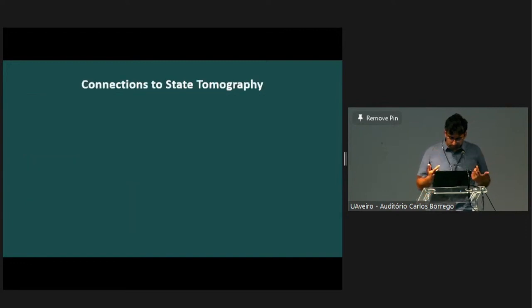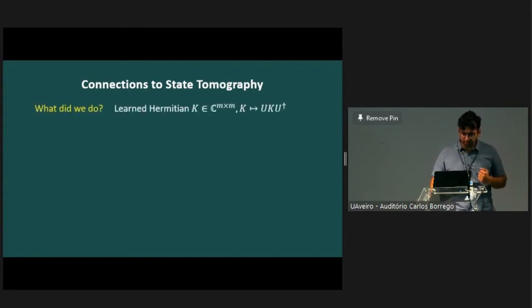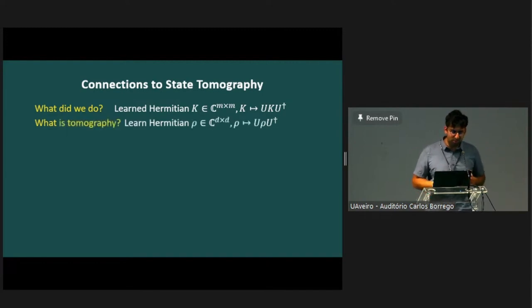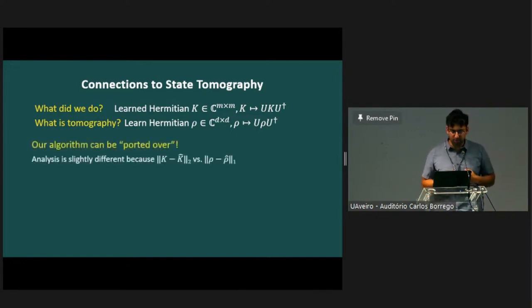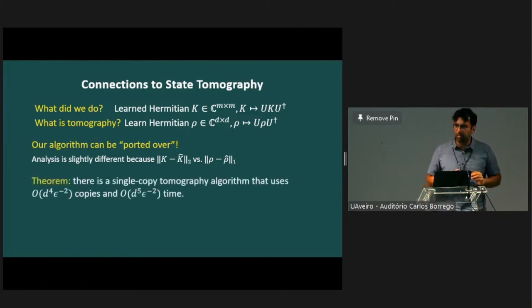Now I want to turn back to quantum state tomography. What I've claimed so far is that we're able to reconstruct a Hermitian matrix and that unitary evolution works as shown. The problem of state tomography is actually pretty much the same thing. We have a Hermitian matrix that describes our system and unitary evolution works the same way. We actually show that our fermionic tomography algorithm can be ported over to become a state tomography algorithm. The algorithm is exactly the same. The only thing that changes is the analysis because the learning goals are slightly different. In the fermionic case, we needed to bound the spectral norm. And for state tomography, we need to bound the one norm. We're able to get a tomography algorithm that uses single copy measurements that has the following performance shown on the screen.